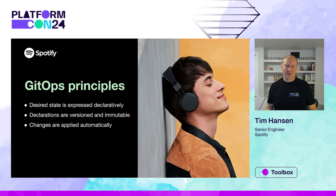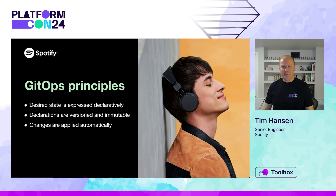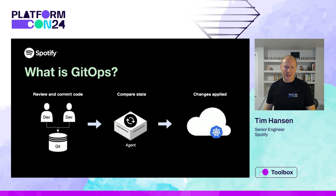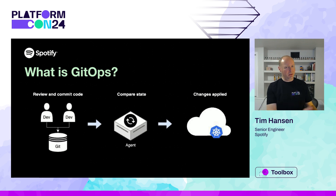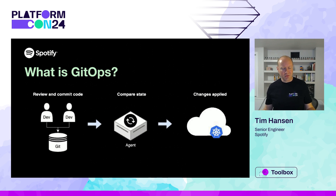The Git part of GitOps already handles the first two principles: since we're using Git as the source of truth, declarations are clearly stored in files, and Git commits are also versioned and immutable. That just leaves the last one — we have an agent, a process paying attention to Git, which can look at your declaration versus reality and apply the necessary changes. GitOps isn't all that complicated: we store declarations in Git, those get reconciled with reality. This should be familiar if you're used to tools like Terraform.